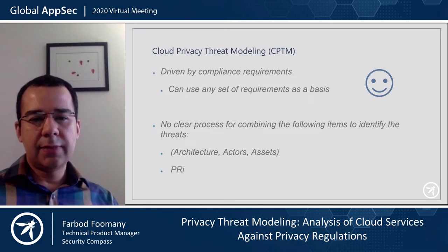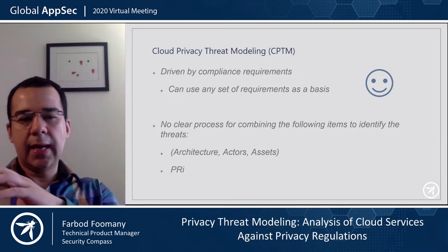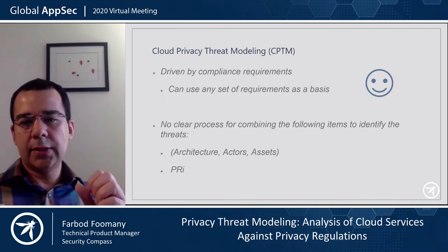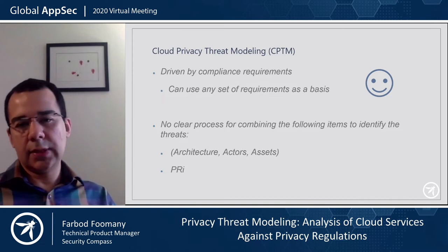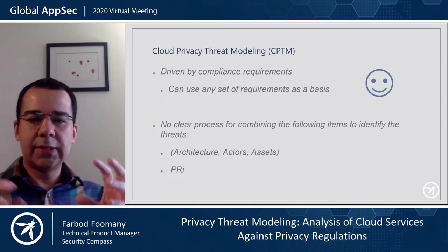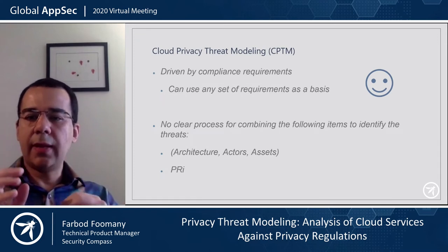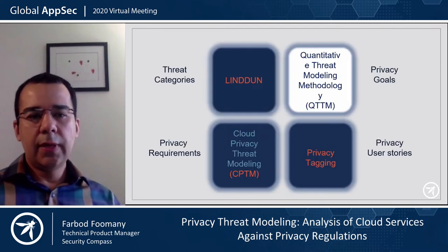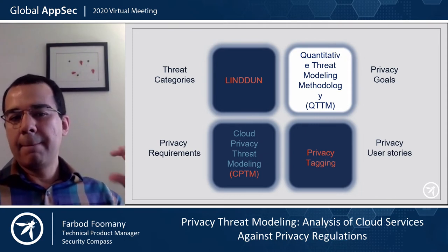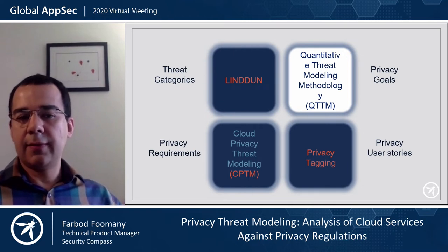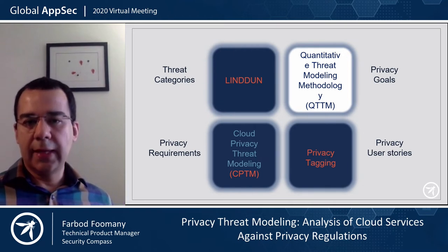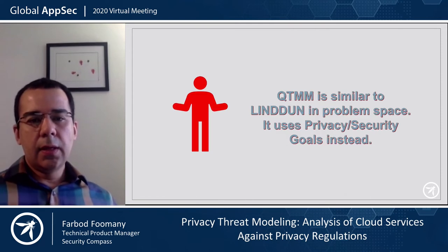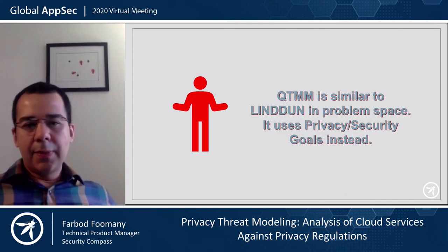Then they go and prioritize the threats. The pros and cons of CPTM: it is driven by compliance requirements, which is positive — you can use any set of requirements, any law, any standard. The challenge I found with CPTM is that it doesn't specify how you get from architecture, actors, and assets to those actual threats. It tells you to draw an architecture diagram, identify actors and assets, and look at the privacy requirements, but there's not an established process from these elements to the threats.